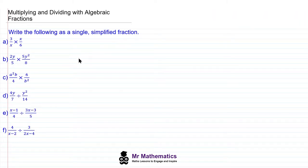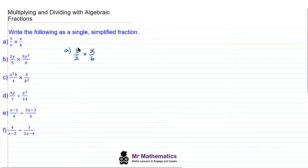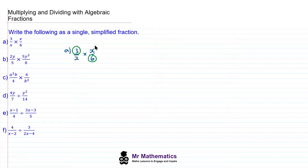In this lesson I'm going to show you how to multiply and divide with algebraic fractions using my method of cross-simplifying. We'll begin with question A, where we have 3 over x multiplied by x over 6. To work out this product, we're going to look for a common factor of a numerator in one fraction and a denominator in another fraction.